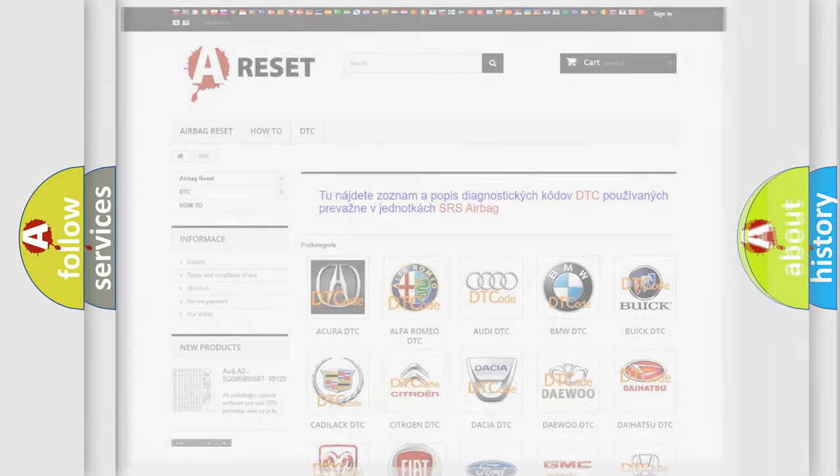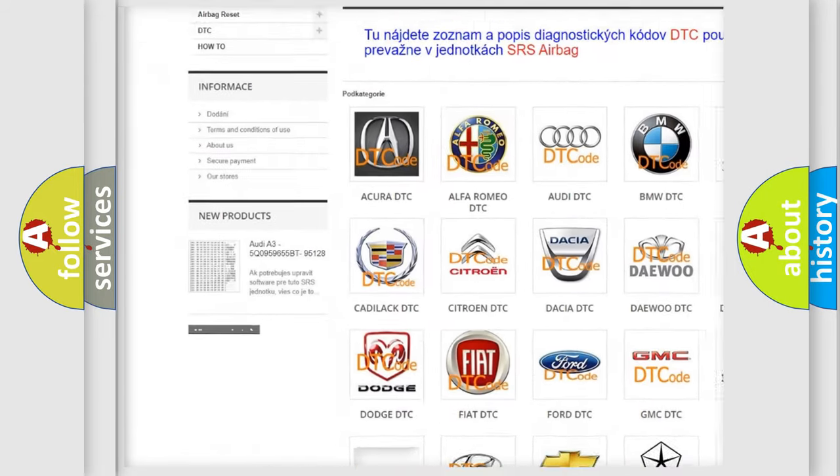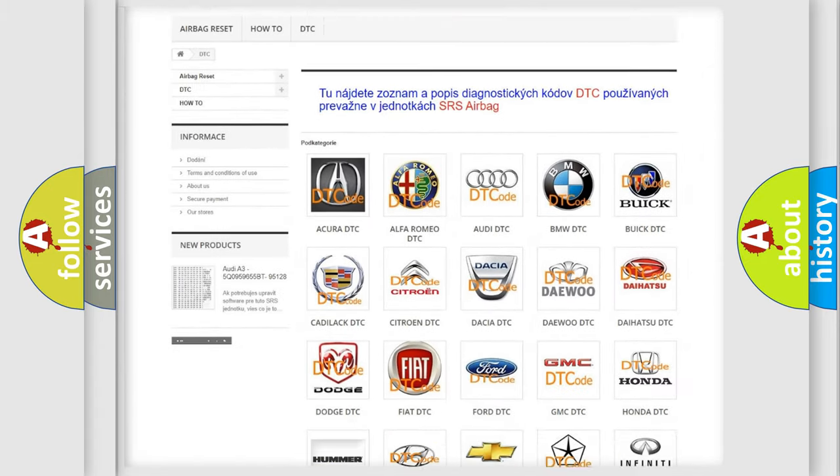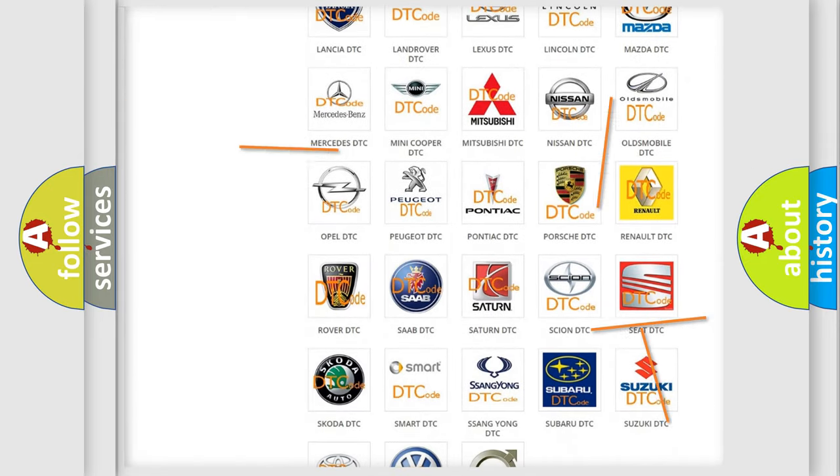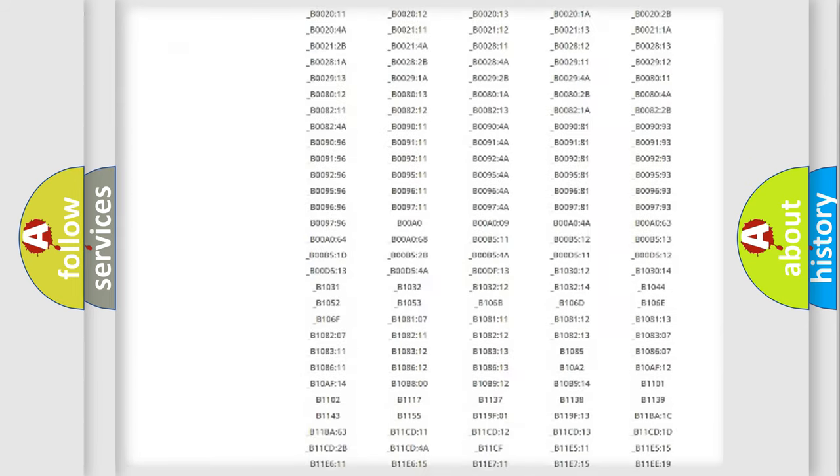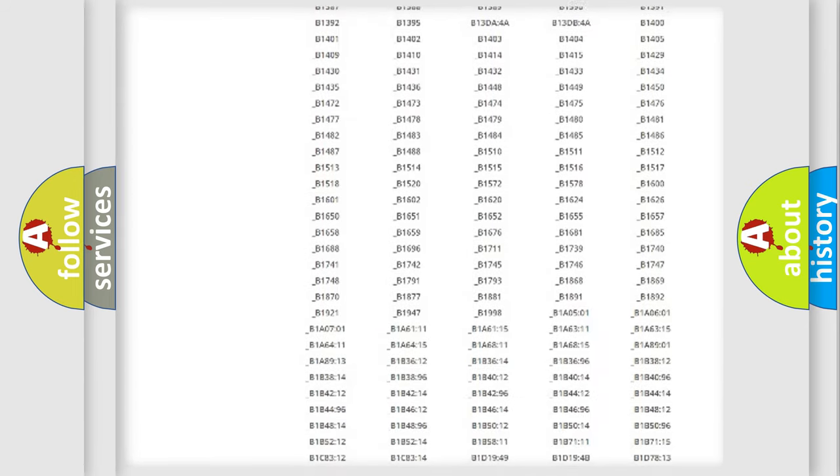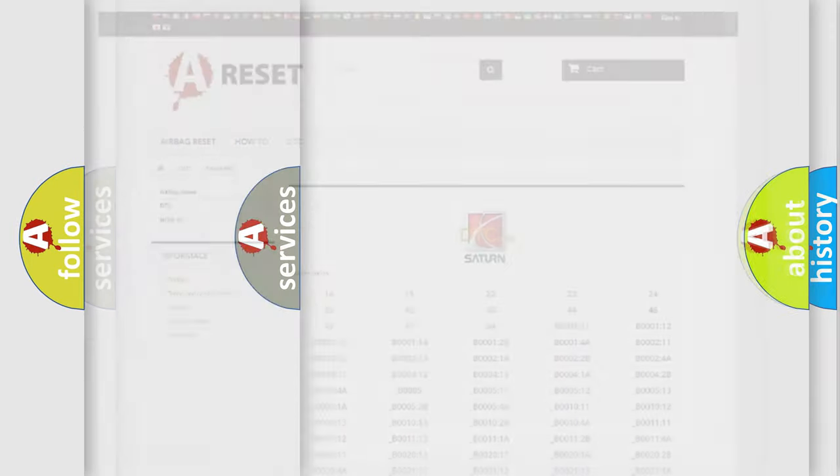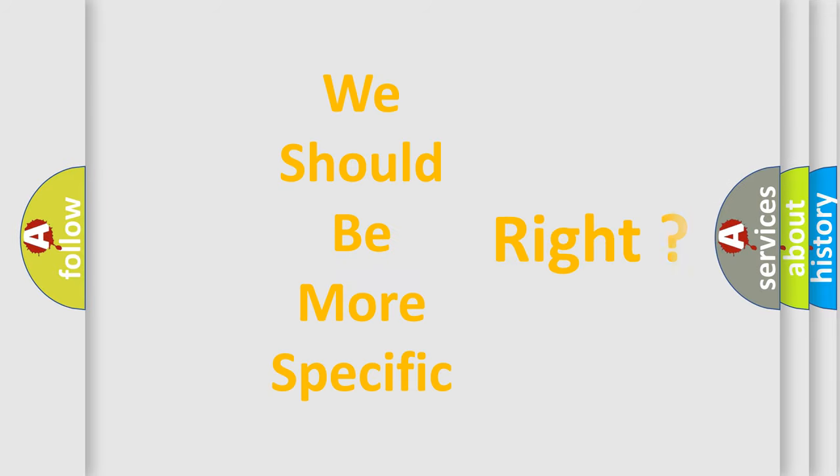Our website airbagreset.sk produces useful videos for you. You do not have to go through the OBD-II protocol anymore to know how to troubleshoot any car breakdown. You will find all the diagnostic codes that can be diagnosed in Saturn vehicles, and many other useful things. The following demonstration will help you look into the world of software for car control units.